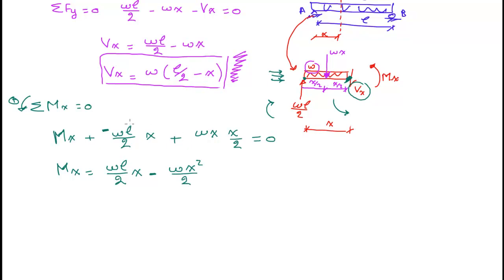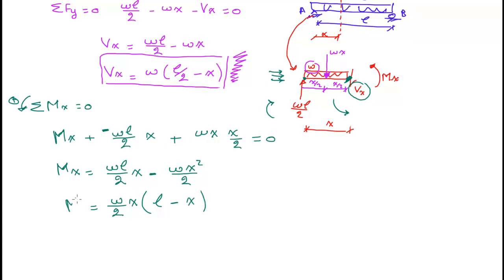Solving for Mx: Mx = WL/2·x − WX²/2. Taking W and 1/2 as common factors and x as a factor: Mx = (W/2)·x·(L − x). This is the bending moment equation as a function of x.